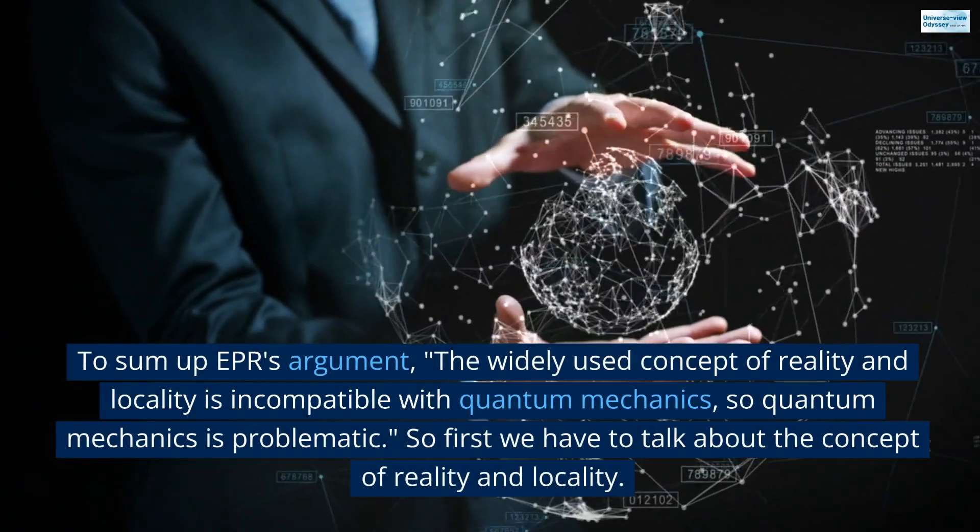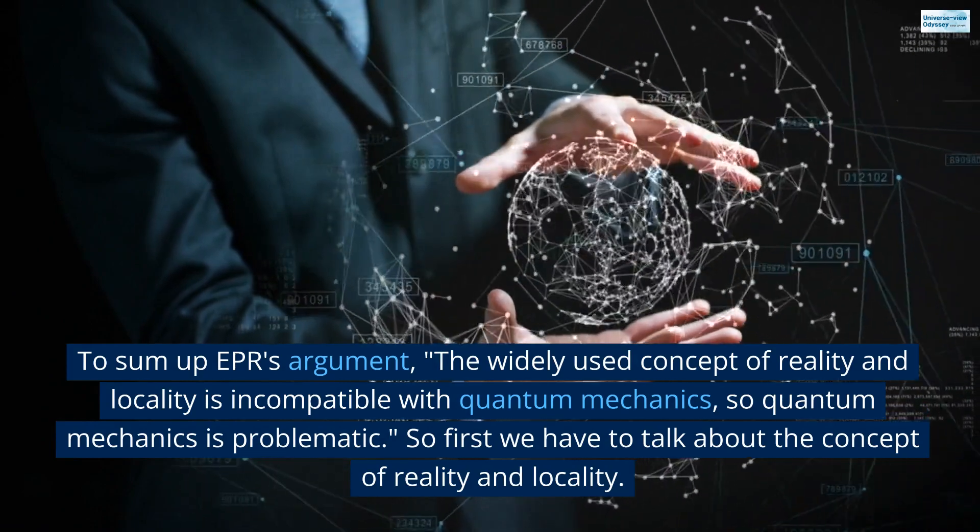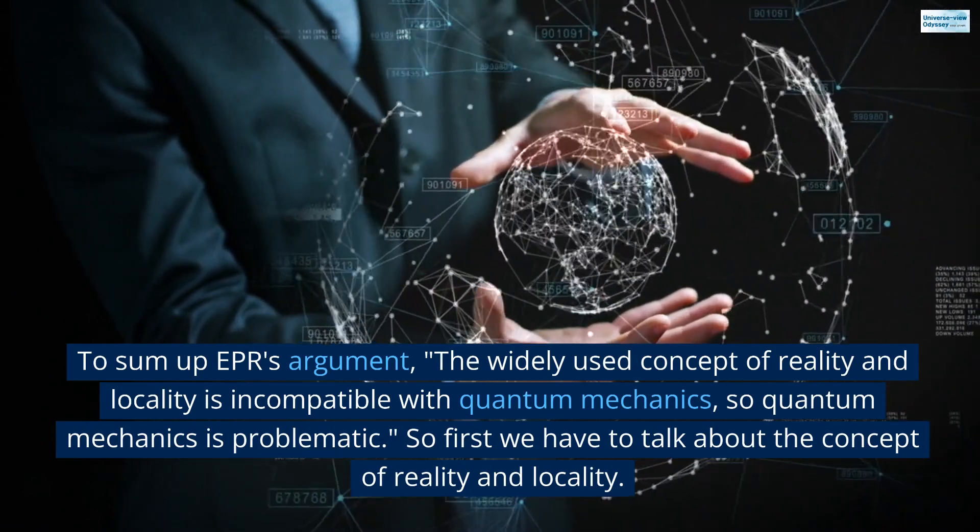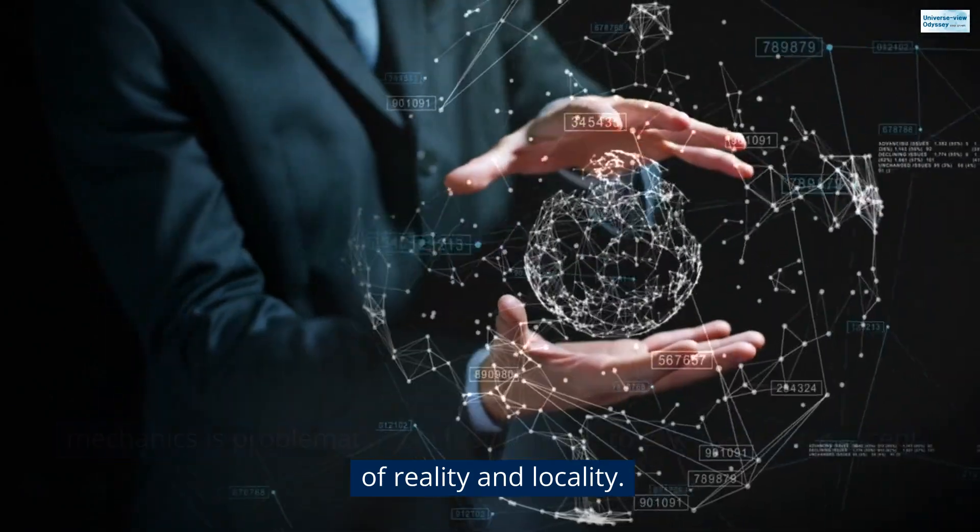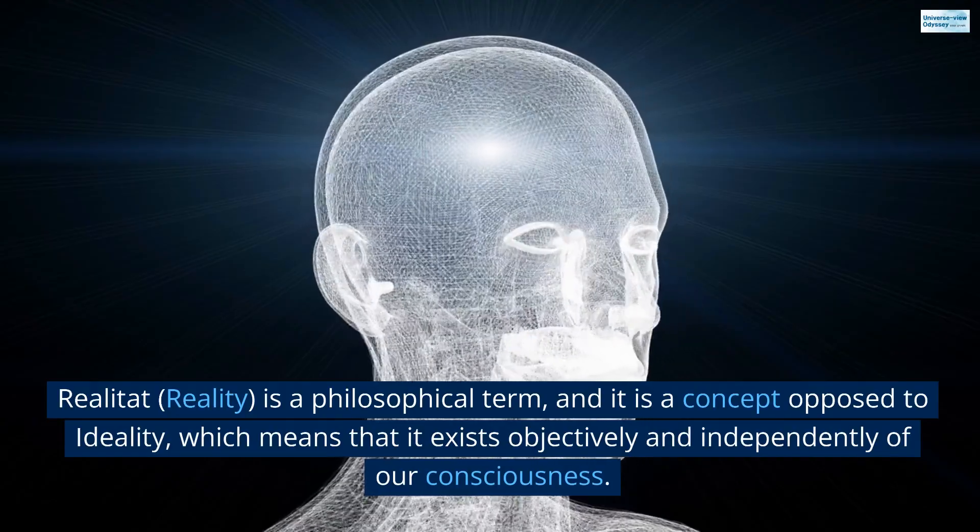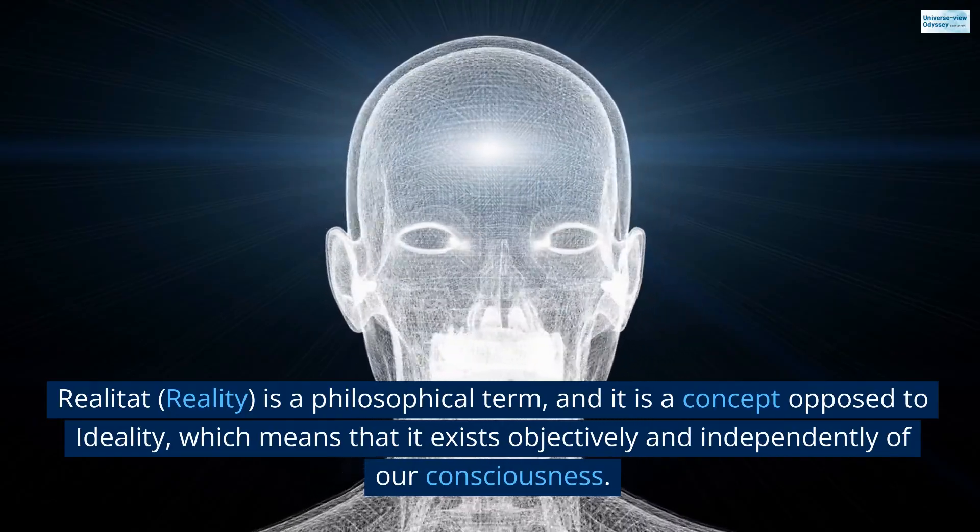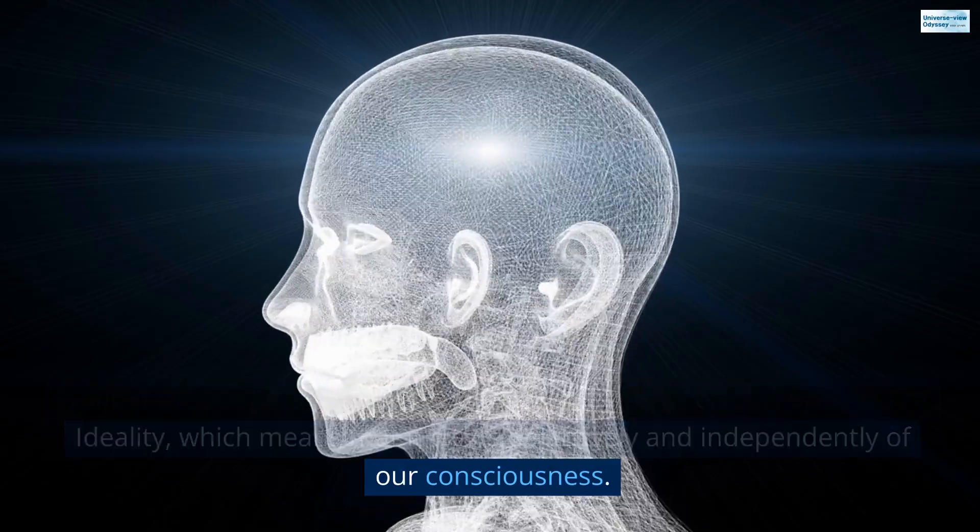To sum up EPR's argument, the widely used concept of reality and locality is incompatible with quantum mechanics, so quantum mechanics is problematic. So first we have to talk about the concept of reality and locality. Reality is a philosophical term, and it is a concept opposed to ideality, which means that it exists objectively and independently of our consciousness.